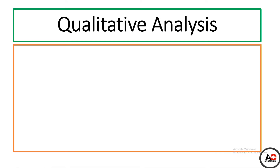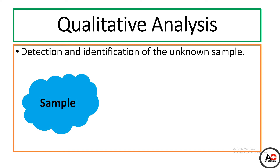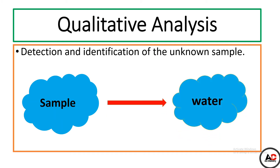Qualitative analysis means the detection and identification of an unknown sample. یعنی qualitative analysis میں ہم unknown sample کو identify اور detect کرتے ہیں کہ وہ sample کیا ہے۔ For example, اگر کوئی sample سامنے ہو تو اس کی identity کا پتہ لگانا — یہ qualitative analysis کہلاتا ہے۔